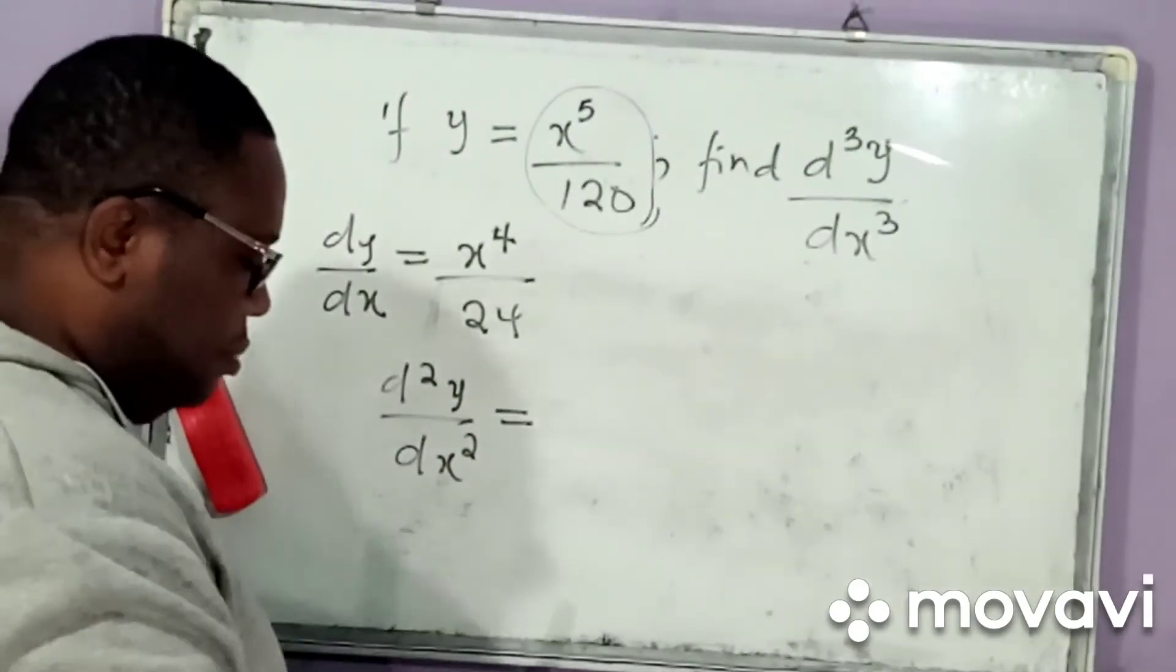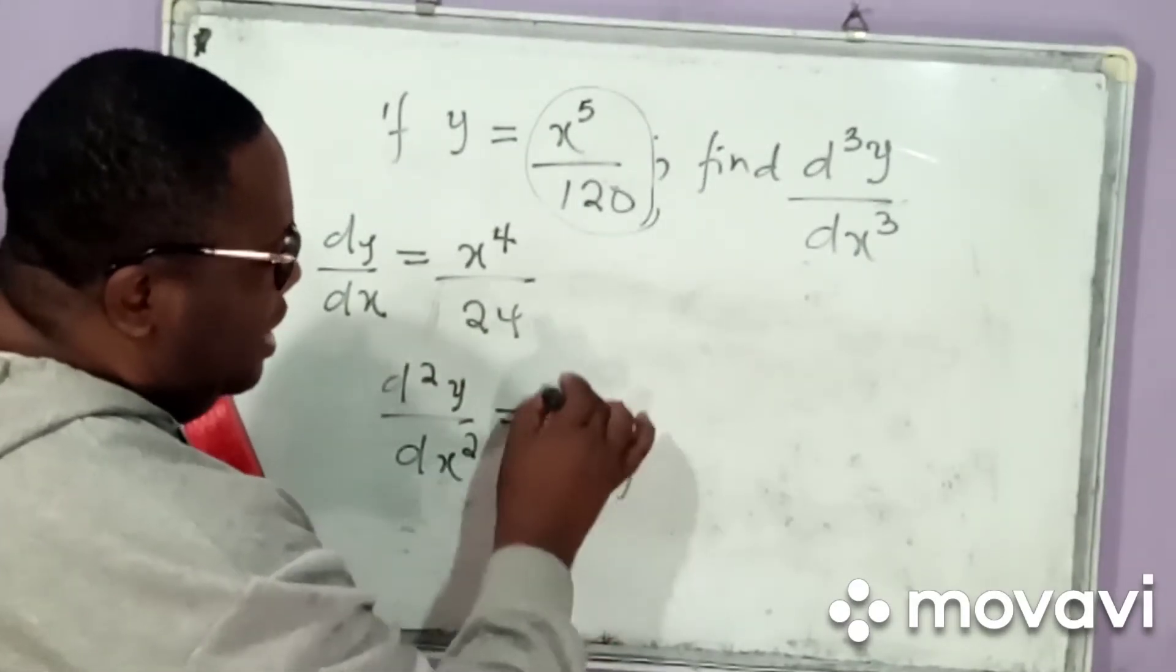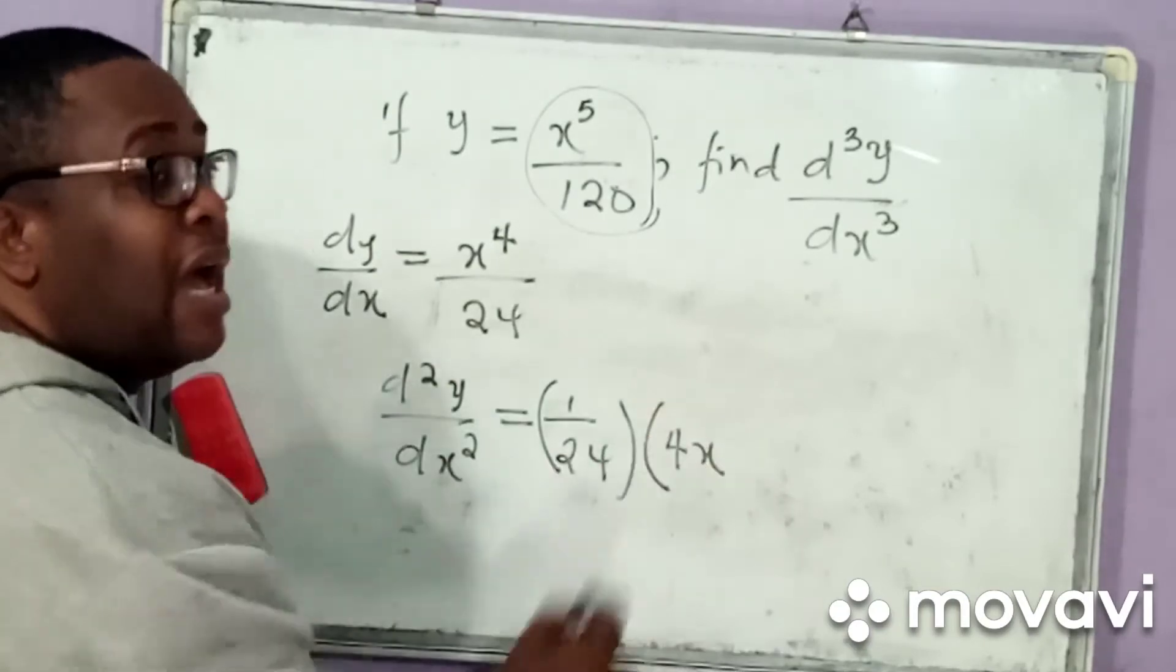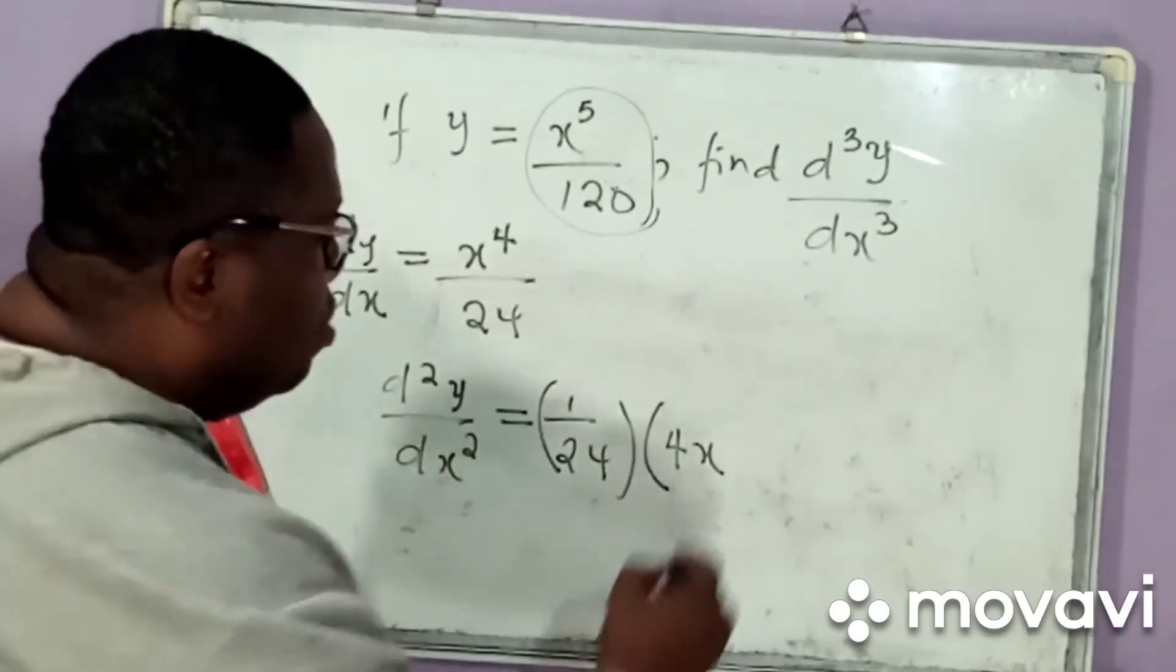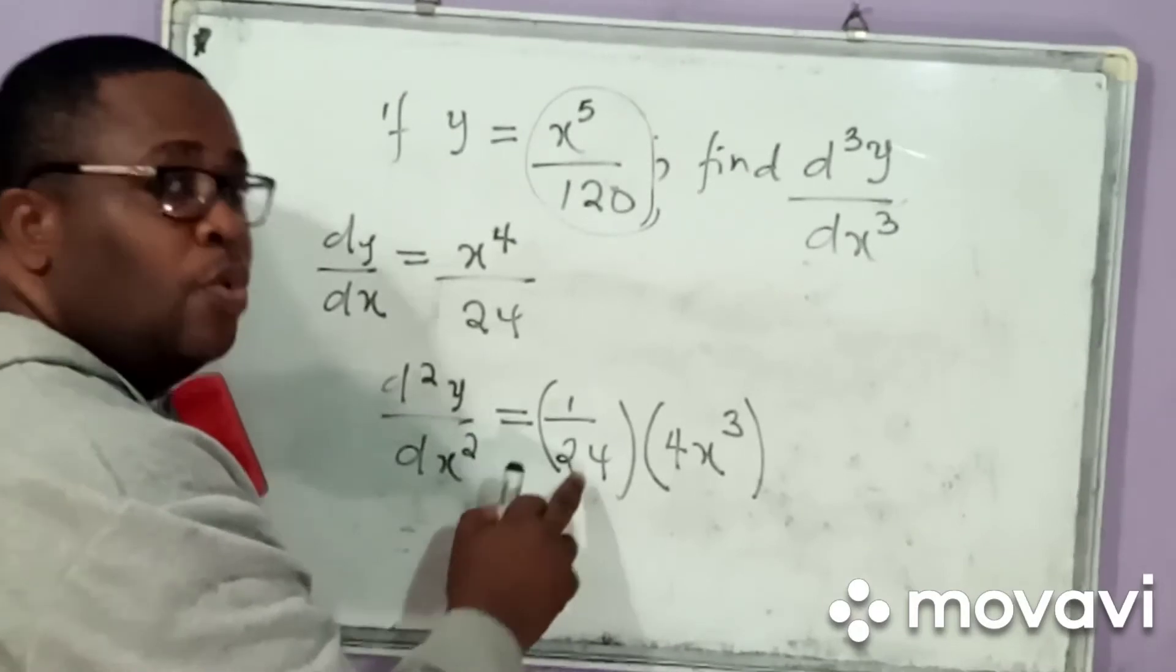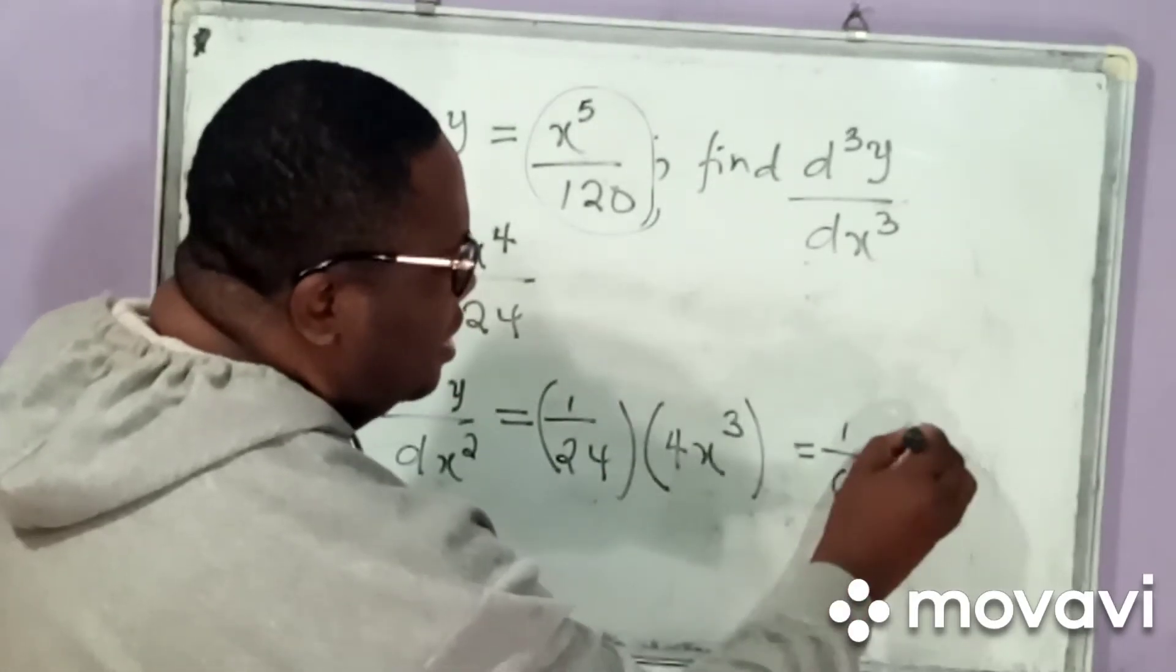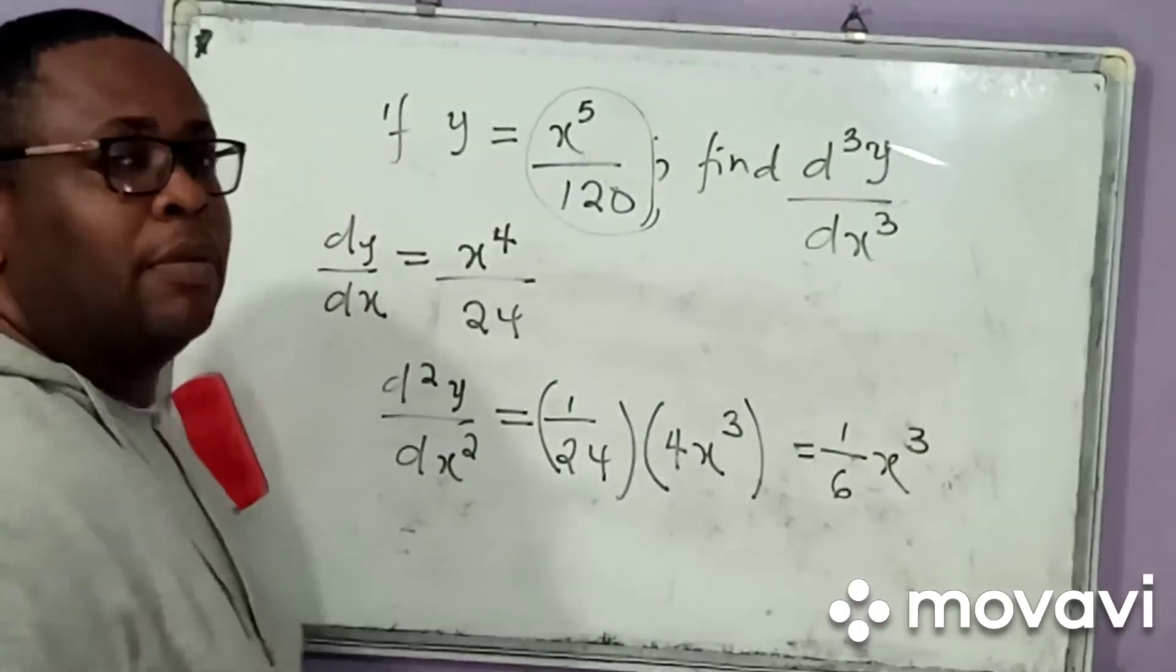Now, when we do that, it means that d squared y by dx squared simply becomes equal to, we are taking 1 over 24 outside, then multiply and bring down 4. When you bring that 4, you have 4x to the power 4 minus 1, which simply gives me 3. So, I have 3. And then 4 into 24 will simply give me 6. So, this simply gives me 1 over 6 x cubed. Beautiful.